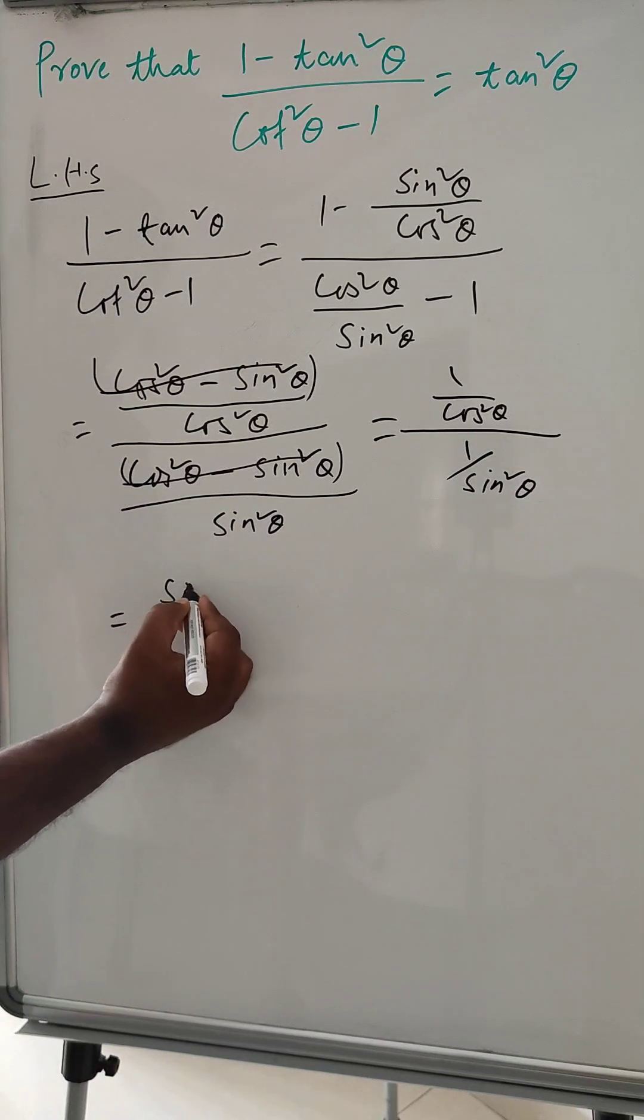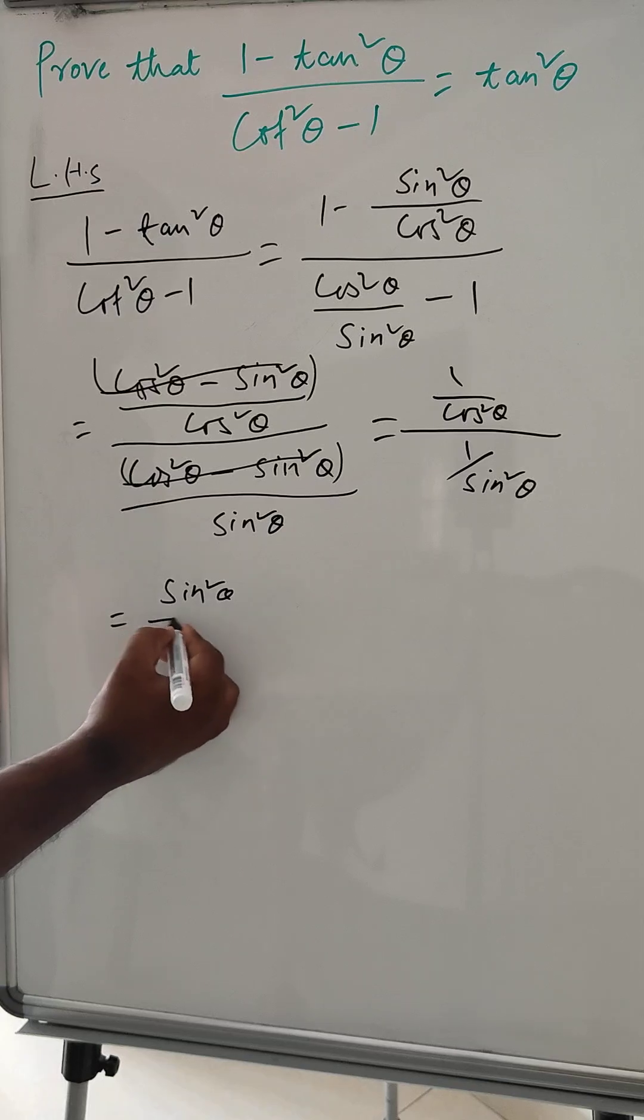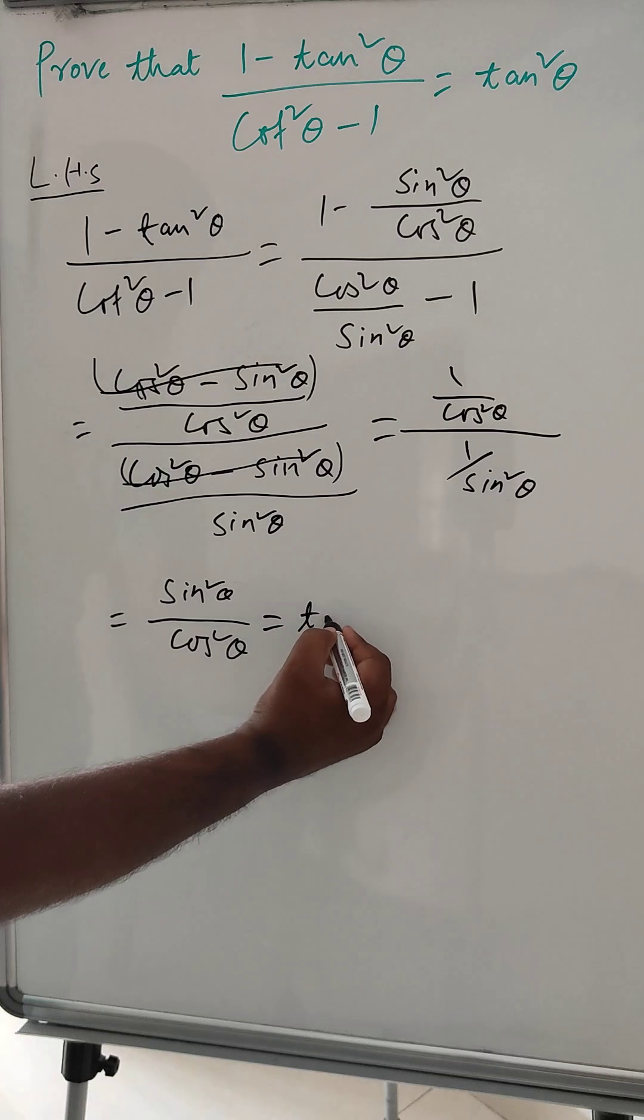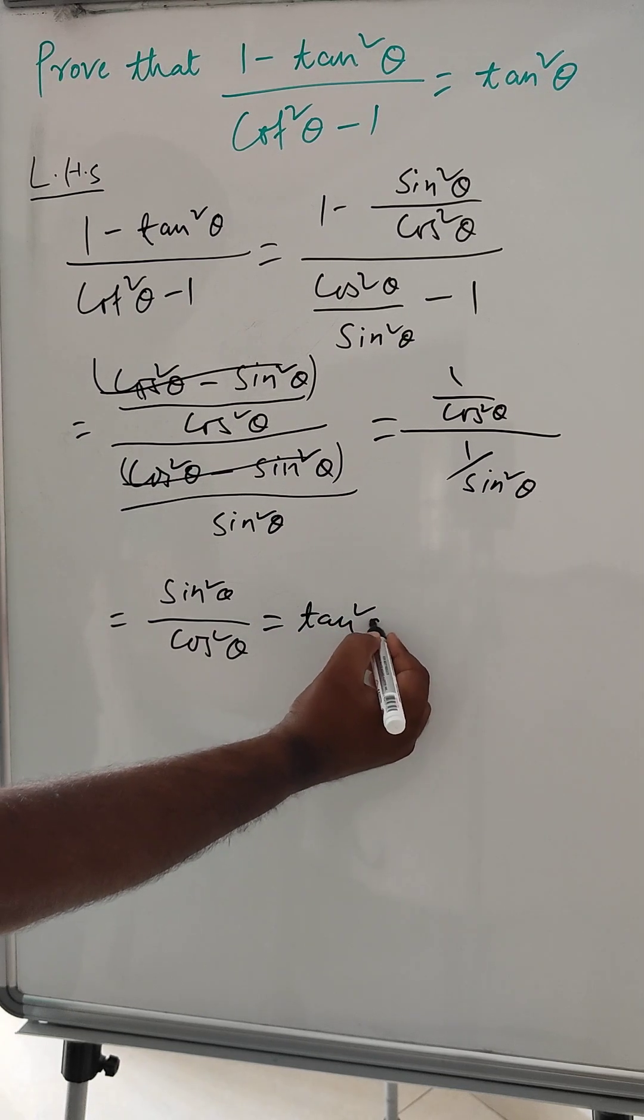So this can be written as sin square theta divided by cos square theta, which is equal to tan square theta.